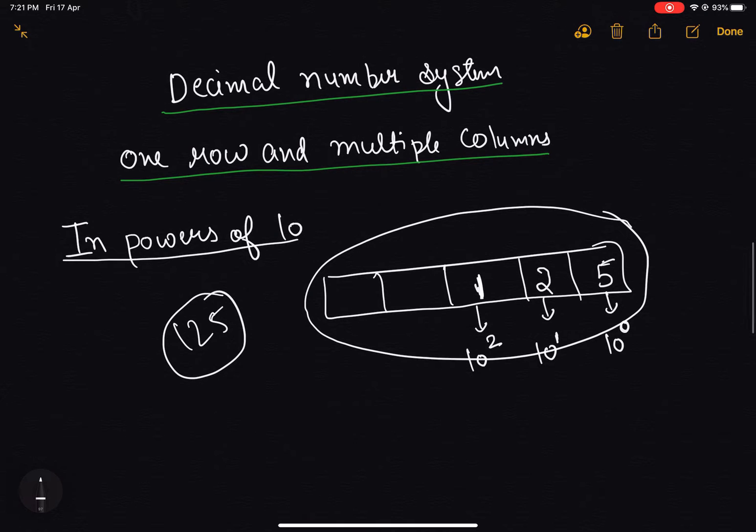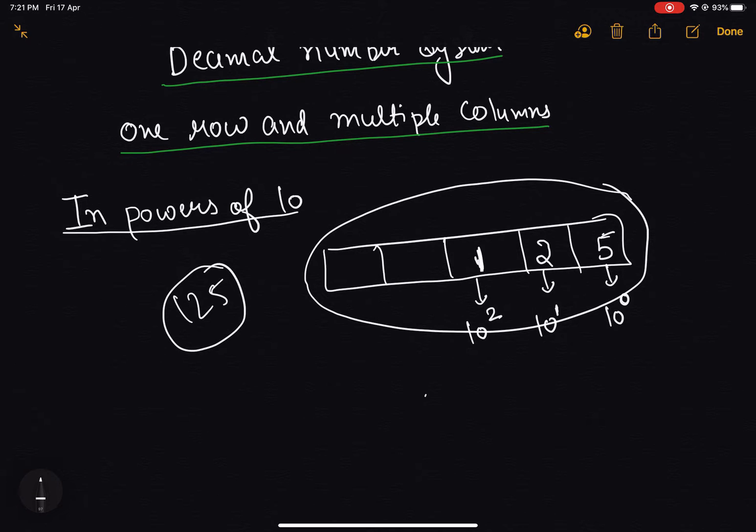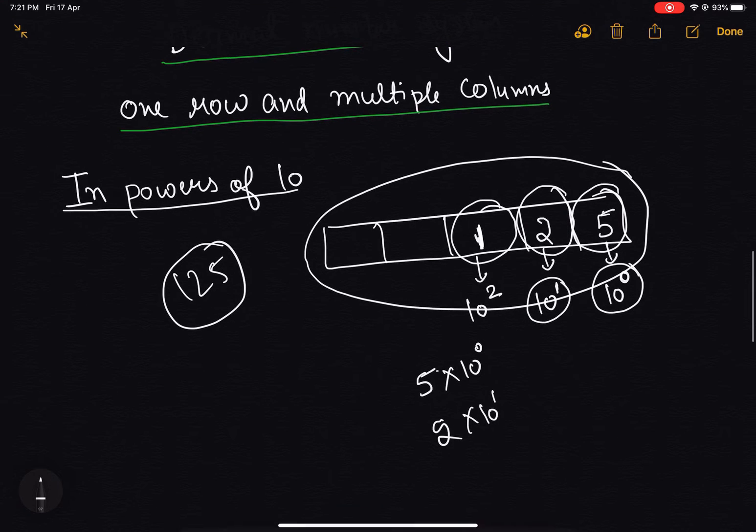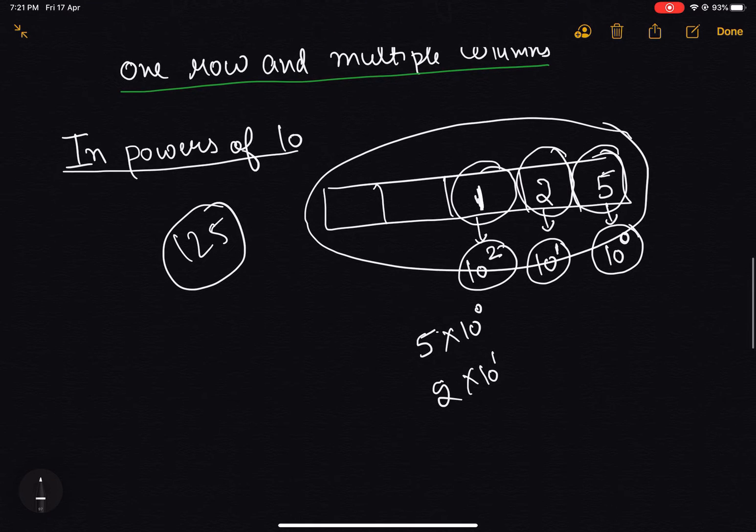If we write a number in decimal number system, then the value of this can be written as 5 times 10 to the power 0, 2 times 10 to the power 1, and 1 times 10 to the power 2. This place will have a weight of 10 to the power 3.